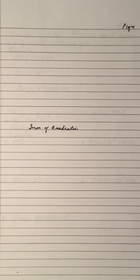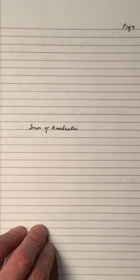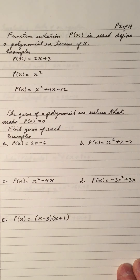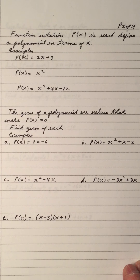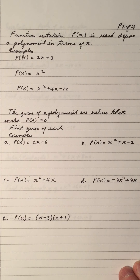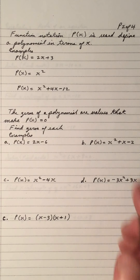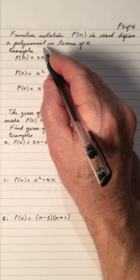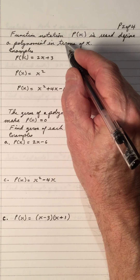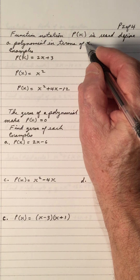Hi, welcome to my video on the zeros of a quadratic. Function notation, P of X, is used to define a polynomial in terms of X.